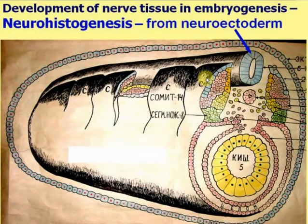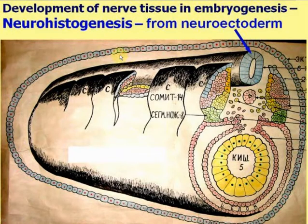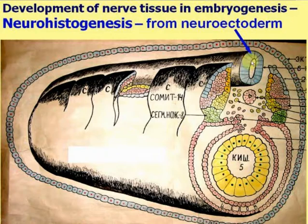Development of nervous tissue in embryogenesis takes place from the neuroectoderm, which converts to the neural tube and neural grooves — this is the source for nervous tissue development.